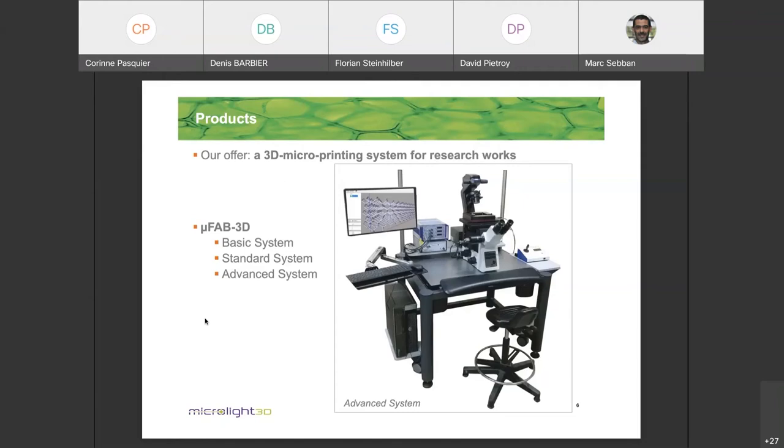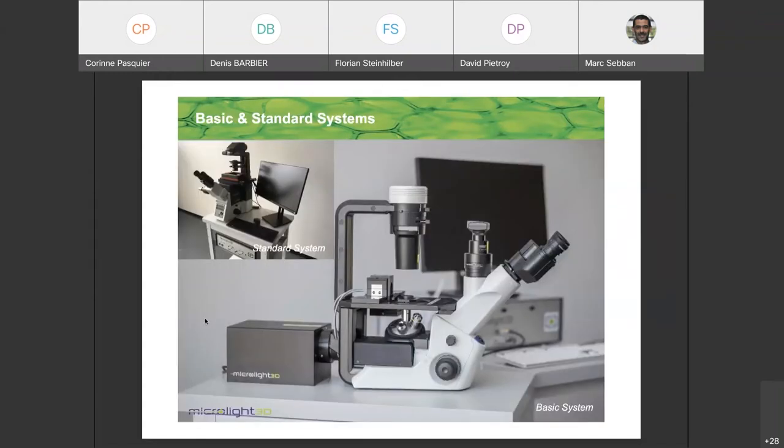So depending on the complexity of the object that you want to print, you have the basic system, the standard and the advance. This here is the picture of the advanced system. And on this slide, you have the basic and the standard systems. Basic one is much more compact and more cost effective.